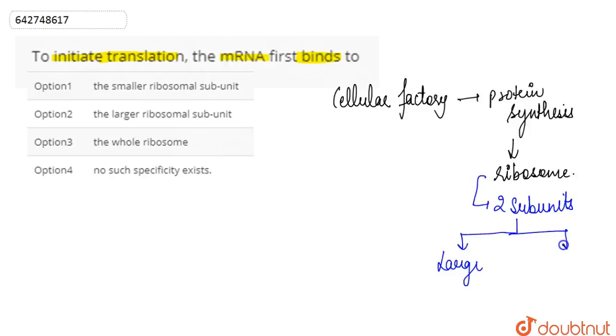When the small subunit encounters the mRNA, the process of translation of mRNA to protein begins.